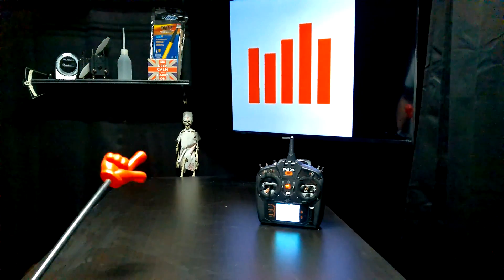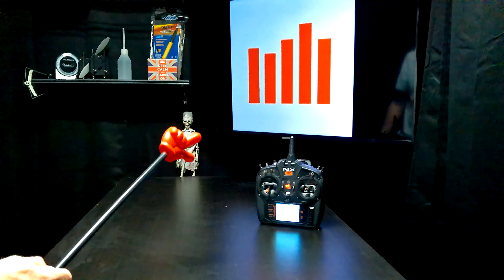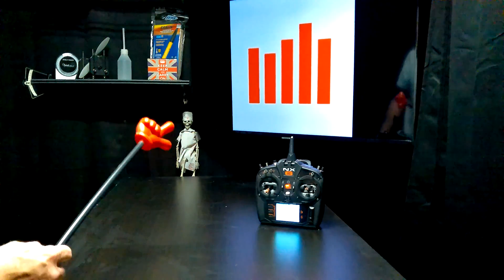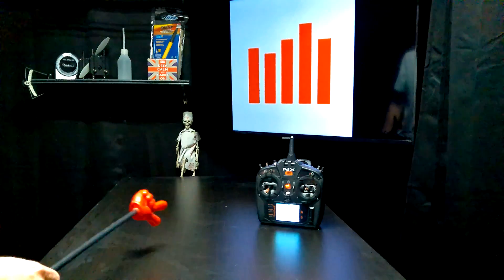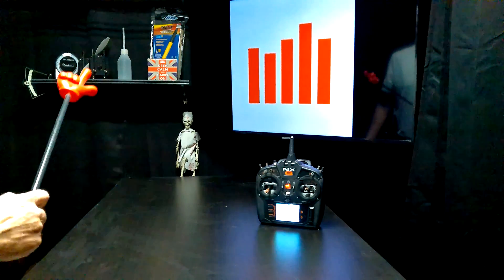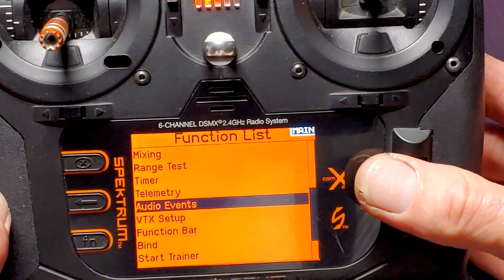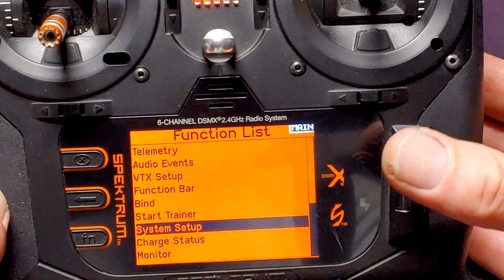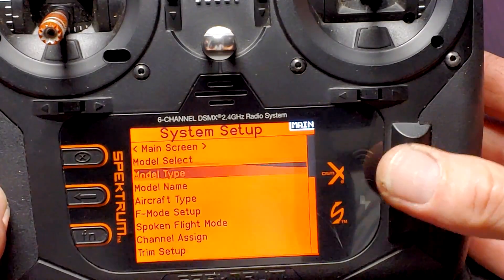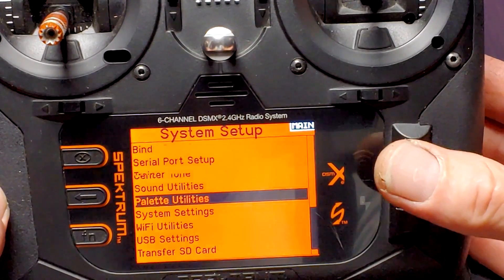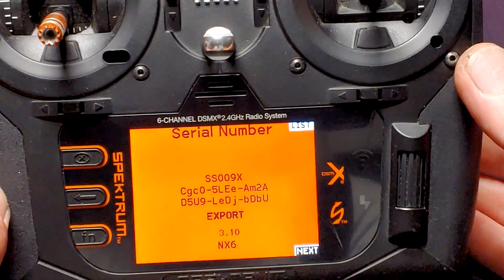There was a huge Spectrum transmitter update that happened not too long ago. It's September 2024, wow time is flying by. Just a month or two ago there was a big update. Let's see what level we have in our NX6 right now before we go with the update.